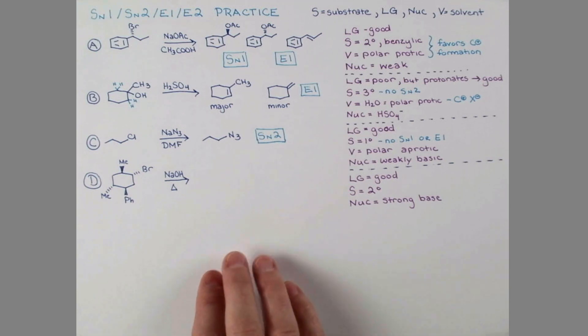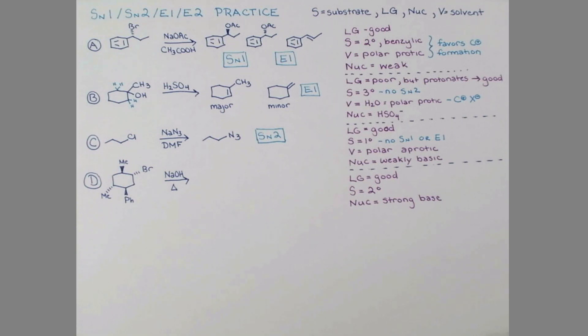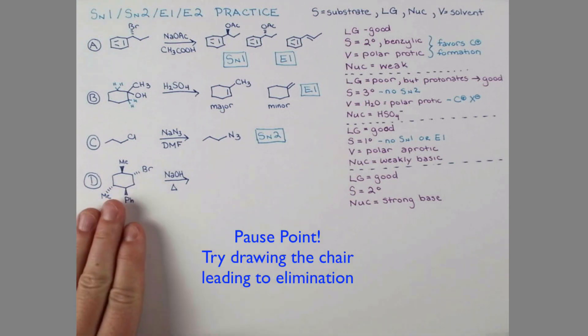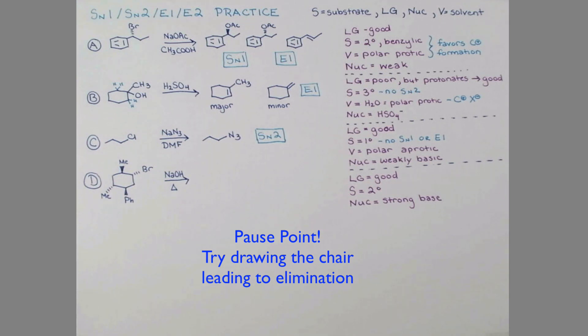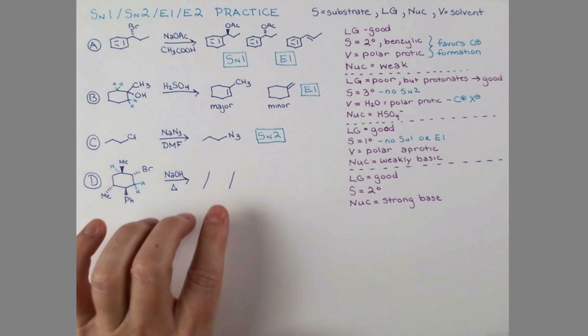On to our next problem. We're going to treat this cyclohexane with NaOH and heat. Again, we have a good leaving group on a secondary carbon. This tells us that we have all of these mechanisms available, so we need to look further. The key factors here - I'm going to skip the solvent - but the key is really the nucleophile. NaOH is one of our strong bases. Strong bases like sodium hydroxide or sodium methoxide always favor elimination, except with unhindered primary substrates where they can undergo substitution.